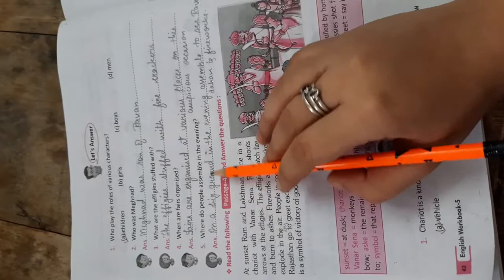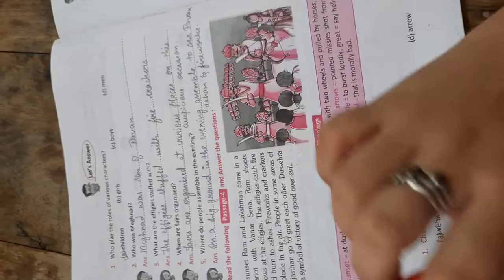Where do people assemble in the evening? On a big ground in the evening assemble to see Ravan, Dehaan and fire works.